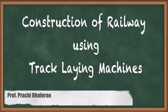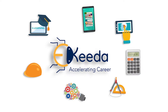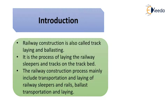In this video we are going to study about the construction of railway lines using track laying machines. The railway construction is also called track laying and ballasting — it is the process of laying the railway sleepers and tracks on the track bed. The railway construction process mainly includes transportation and laying of railway sleepers and rails.